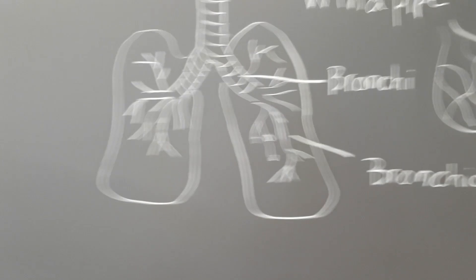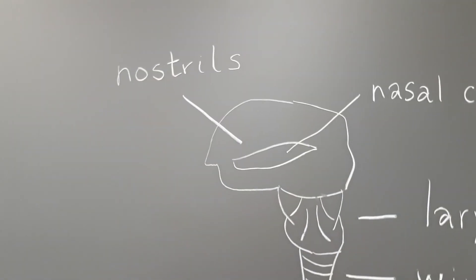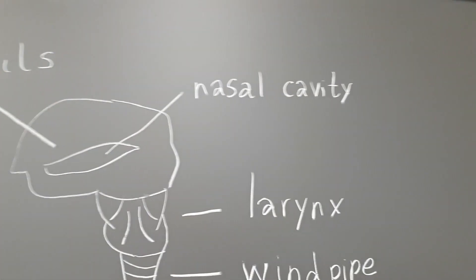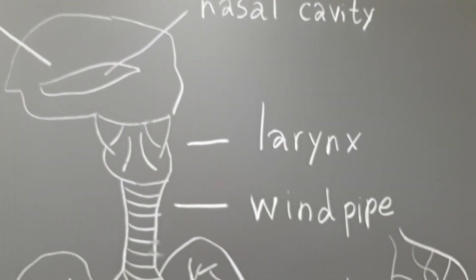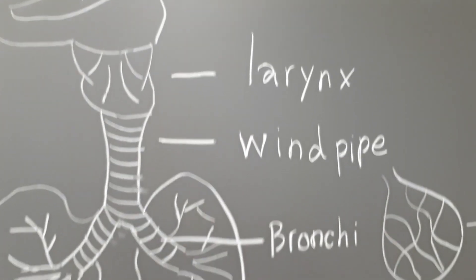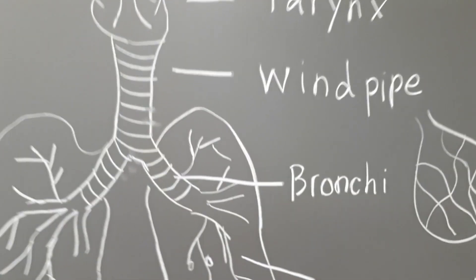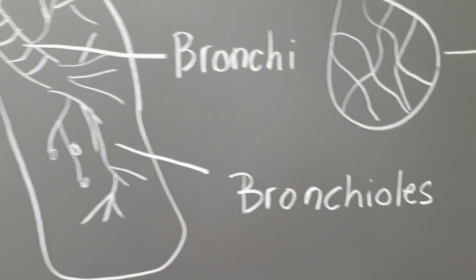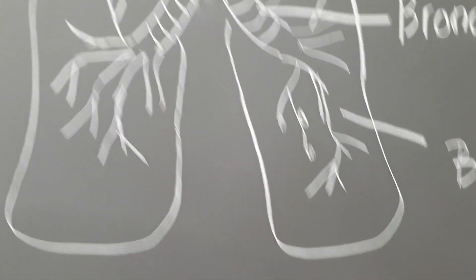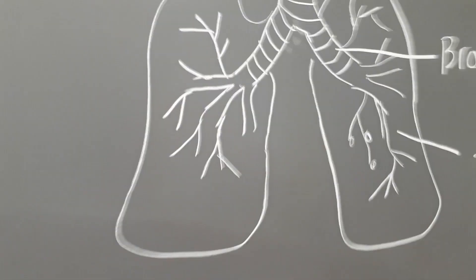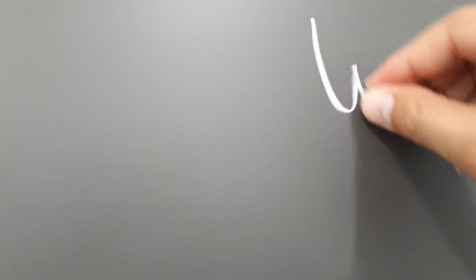So here we have, from the nostrils: the nasal cavity, the larynx, the windpipe, the bronchi, the bronchioles, and of course these two big parts here would be called the lungs.